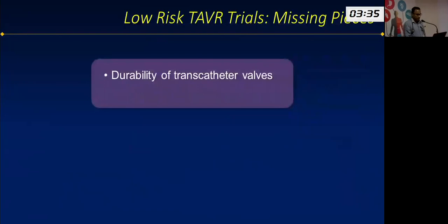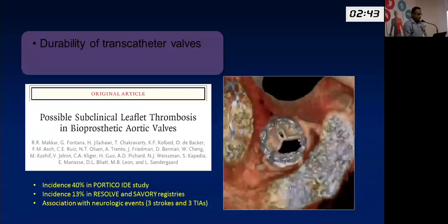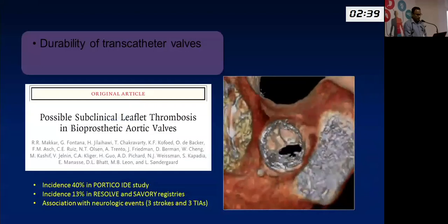A major limitation of these trials is the lack of durability data — we don't know how long these valves will actually last. There was also no mention of subclinical leaflet thrombosis. Durability is especially important for younger patients: if a 50- or 60-year-old patient receives a valve that lasts only 10 years, they could ultimately require two or three procedures, and there is a limited number of TAVI procedures that can be performed in a single patient. Data from a U.S. population shows someone at 75 years has a life expectancy of about 13 years; for an Indian population it would be slightly lower.